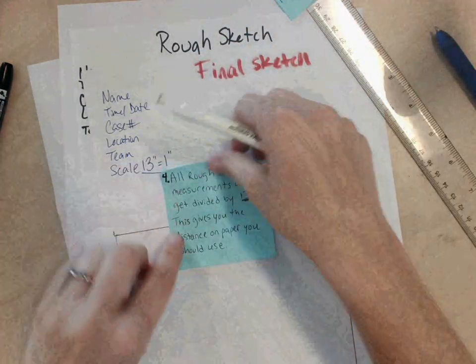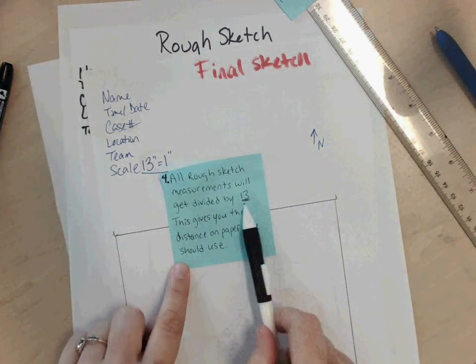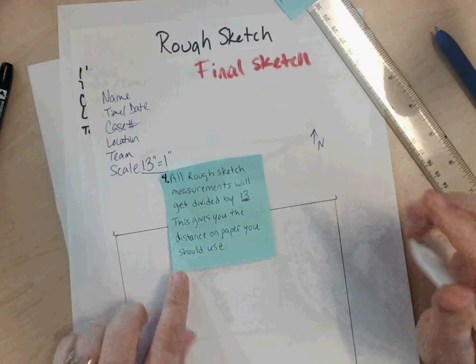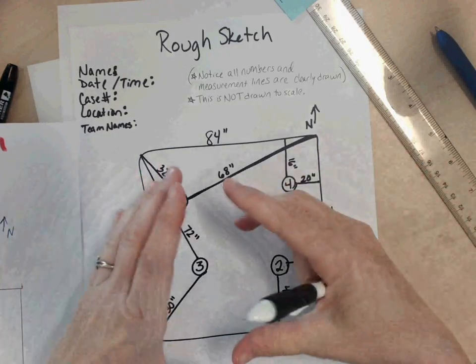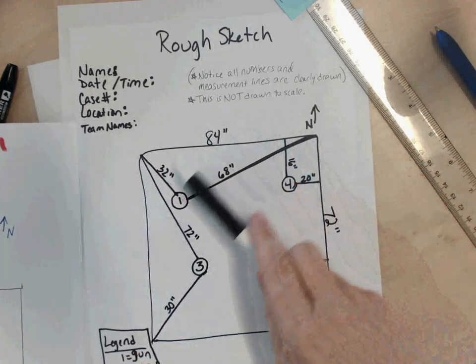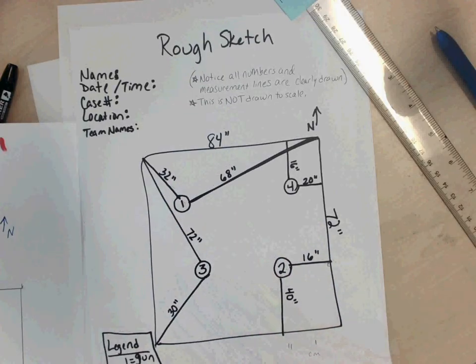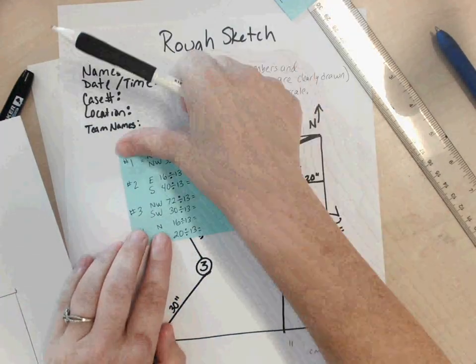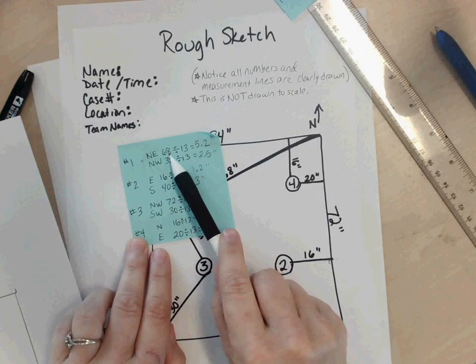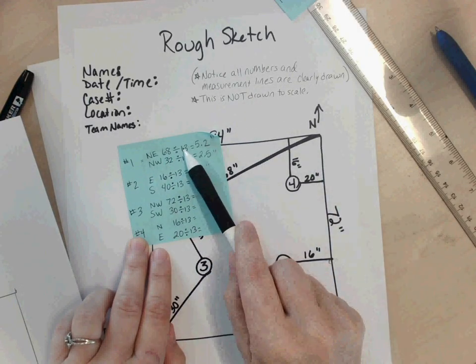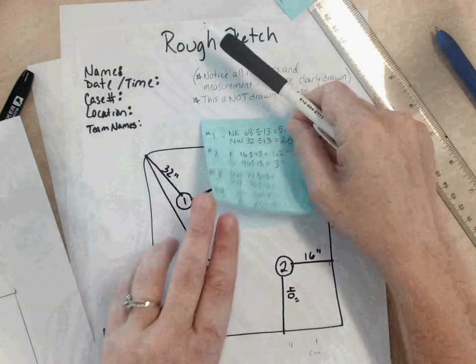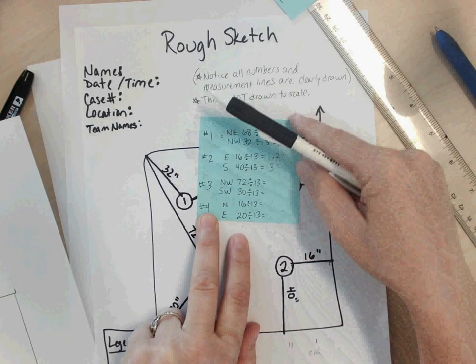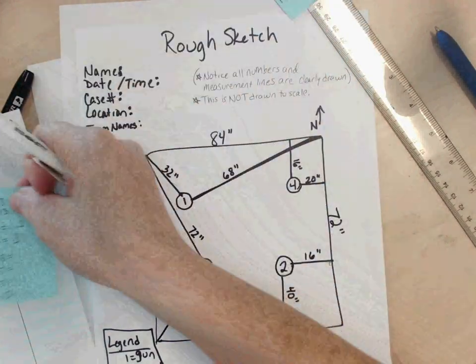The next step is all of your rough sketch measurements are going to get divided by that scale factor, 13. This is going to give you the distance you use on paper. So basically what we're doing is we're taking the real-life crime scene, the actual real-life, and we're going to shrink it down to fit on paper. To shrink it, we need to shrink it 13 times, so all these numbers get divided by 13. So I did those calculations here. So number 1 evidence was 68 inches to the northeast corner. I divide that by 13, I get 5.2. Number 1 was 32 inches to the northwest corner. I divide by 13, I get 2.5.